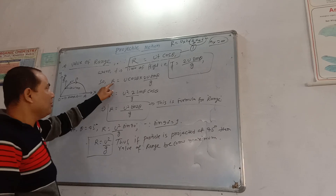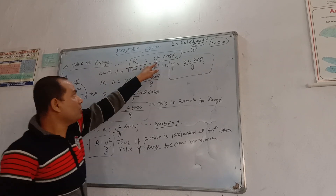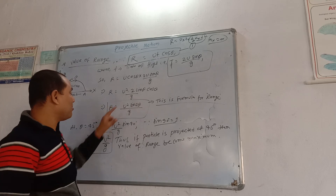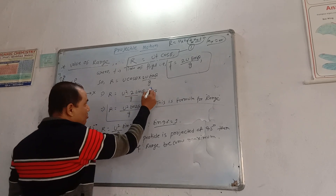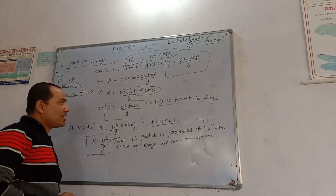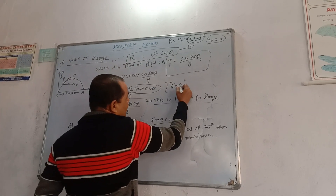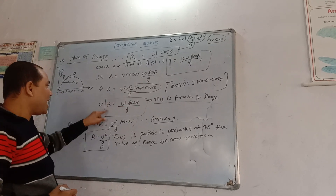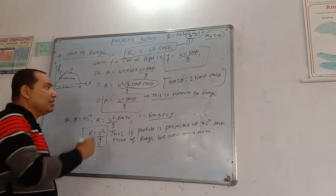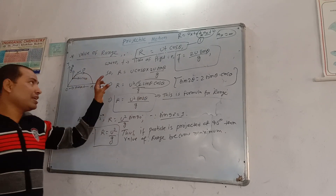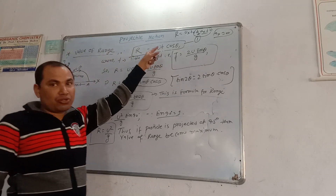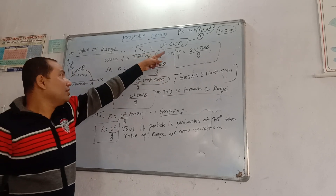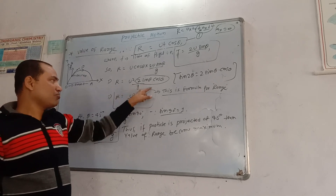Putting the value of t into the range equation: R = u·cos θ · t. Substituting t = 2·u·sin θ / g gives R = u·cos θ · (2·u·sin θ / g), which becomes R = u² · 2·sin θ · cos θ / g. From trigonometry, 2·sin θ · cos θ equals sin 2θ. So the formula for range is R = u²·sin 2θ / g.